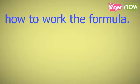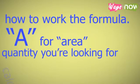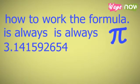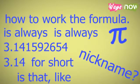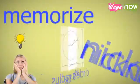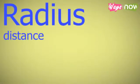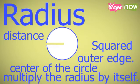Here's how to work the formula. A stands for area, the quantity you're looking for when calculating the area of a circle. Pi is always 3.141592654, or 3.14 for short. The circle's radius is represented by r. The radius is the distance from the center of the circle to its outer edge. Squared means that you multiply the radius by itself.